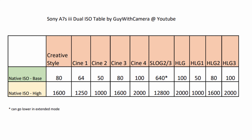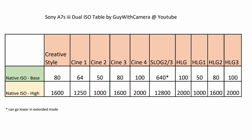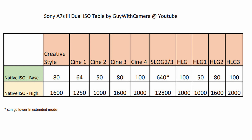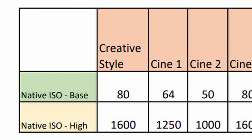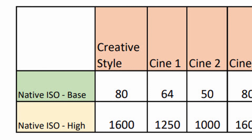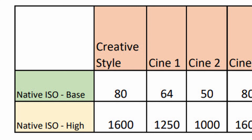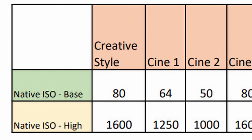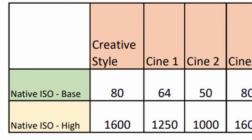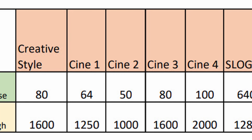The first way is the most simple way — with this PDF chart, or you can download it in JPEG format, whatever you prefer, links in the description. What I have here are the shooting modes in the columns and ISOs in the rows. Anything outside of the picture profiles you can lump together as a creative style. You can see here that the base ISO starts at 80 and goes to 1600.